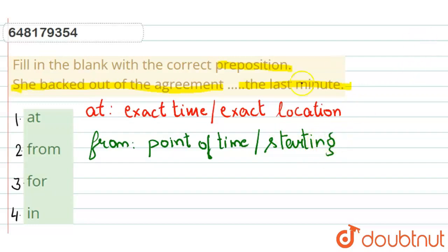Third option जो है, वो है for. For shows करता है period of time, या फिर sometimes for जो है वो purpose को भी डिनोट करता है.